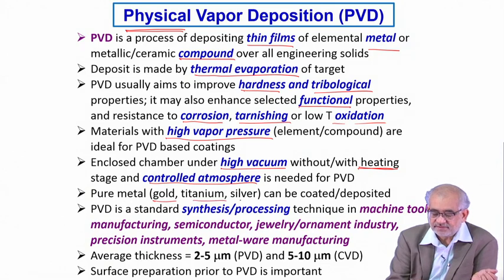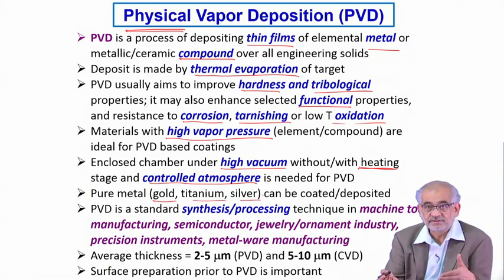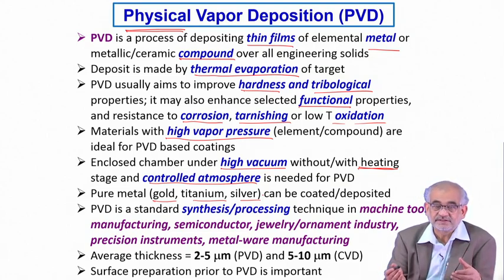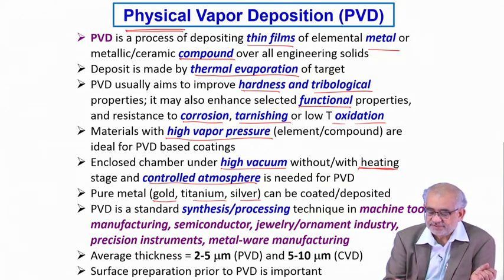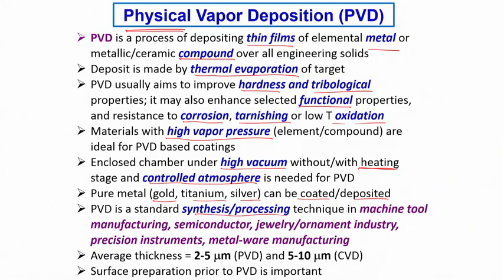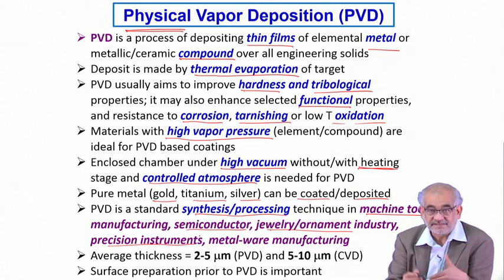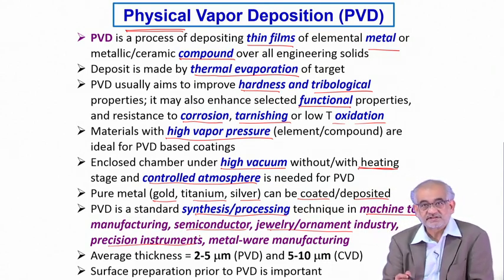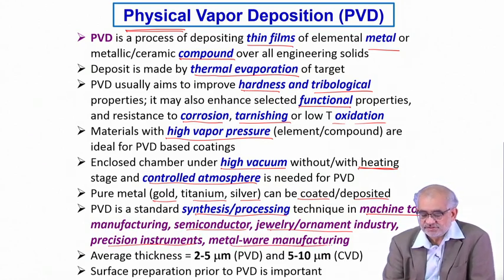You can coat pure metals like gold, titanium, silver, and in special cases chromium or nickel — generally you choose metals which have fairly high vapour pressure. This is also a standard synthesis and processing technique for creating wear-resistant or low-friction coatings on machine tools, for the semiconductor industry creating integrated circuits, in the jewelry and ornament industry, and for precision instruments to match coefficient of thermal expansion or friction coefficient.